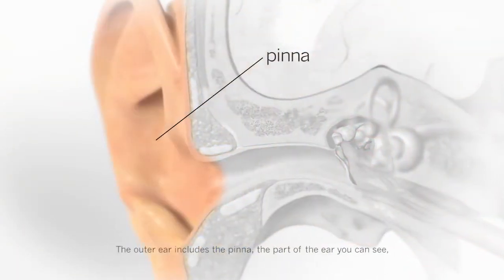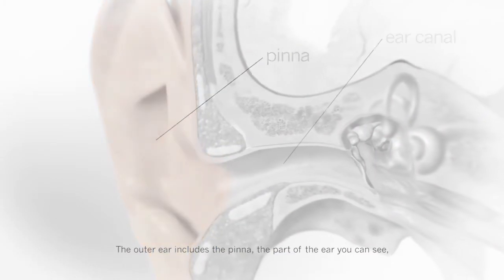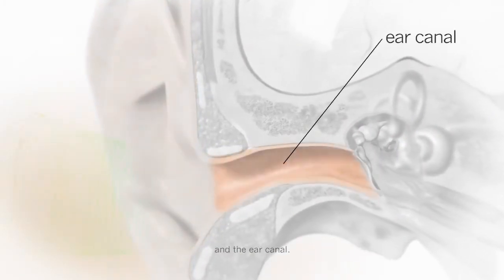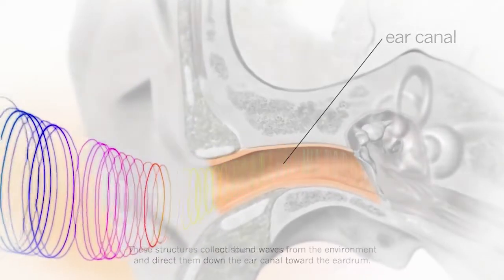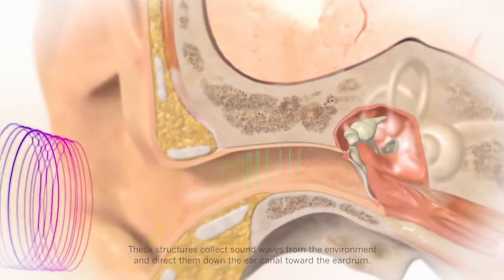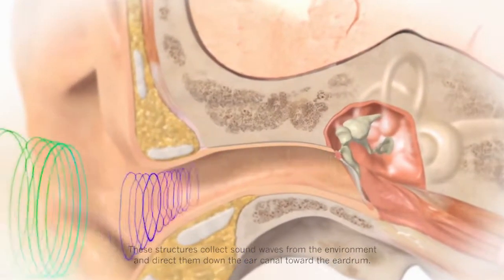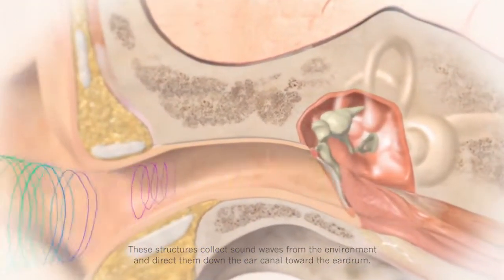The outer ear includes the pinna, the part of the ear you can see, and the ear canal. These structures collect sound waves from the environment and direct them down the ear canal toward the eardrum.